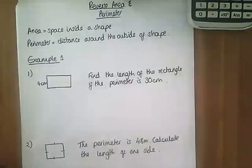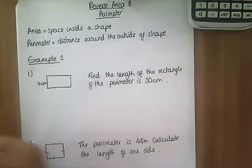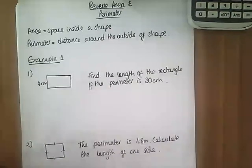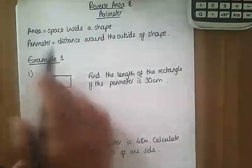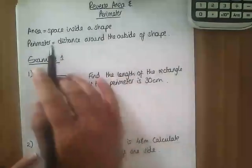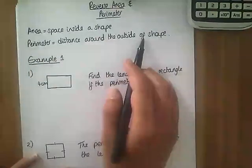Okay morning, we're going to look at reverse area and perimeter today. You'll recall from all our work that area is the space inside a shape and the perimeter is the distance around the outside.